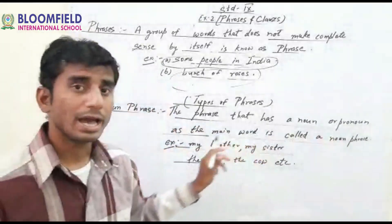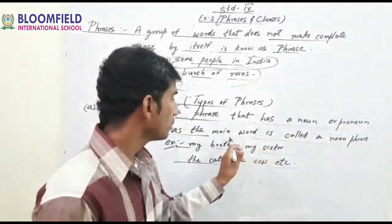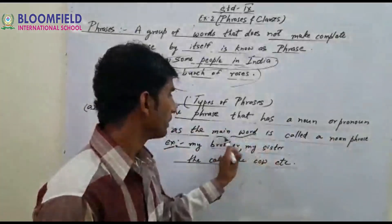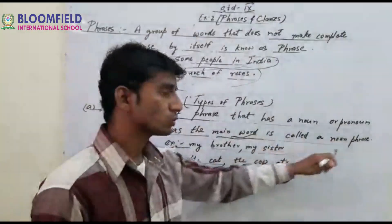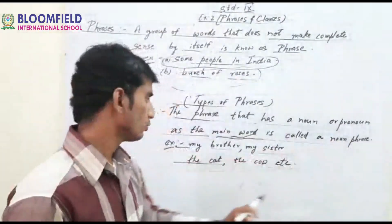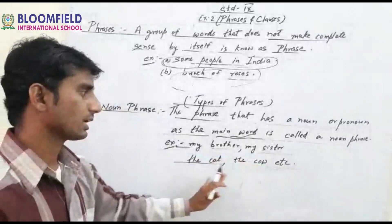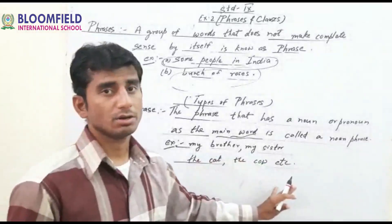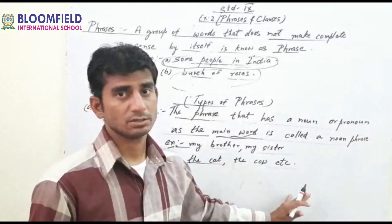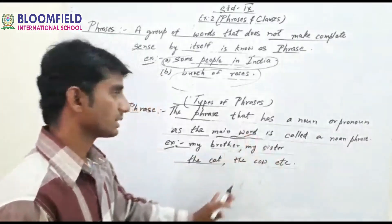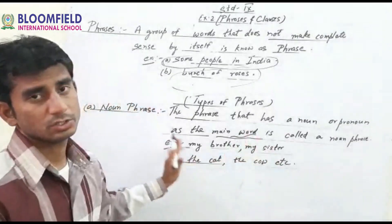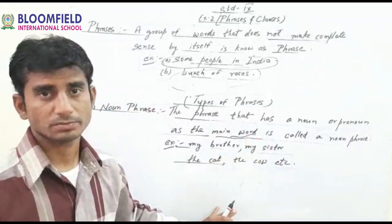The phrase that has a noun or pronoun as the main word is known as a noun phrase. Examples: my brother, my sister, the cat, cow, etc. These are the examples of noun phrases.